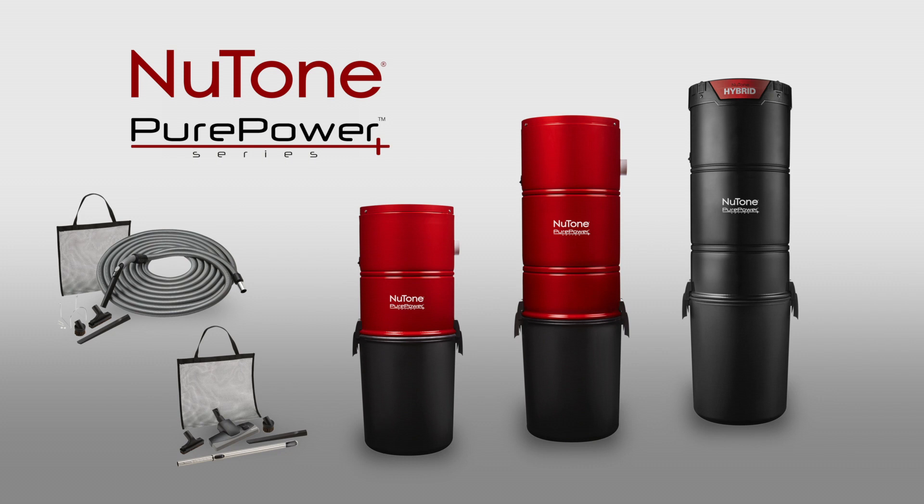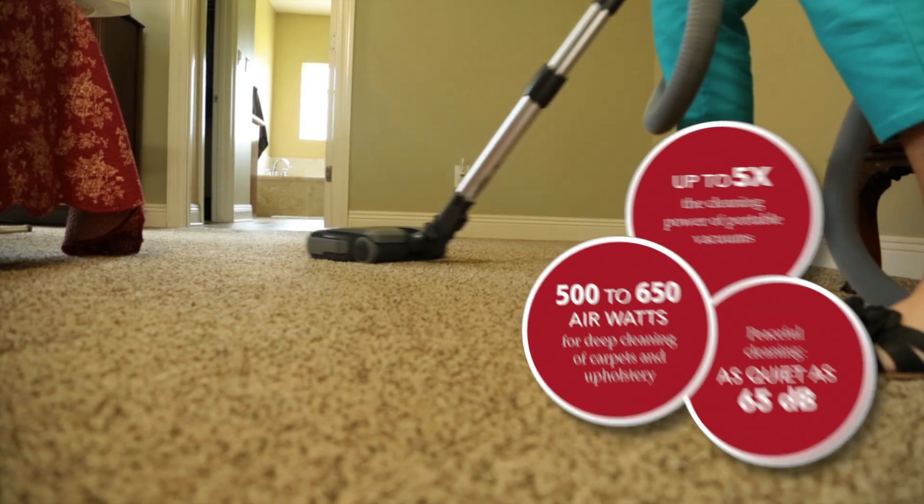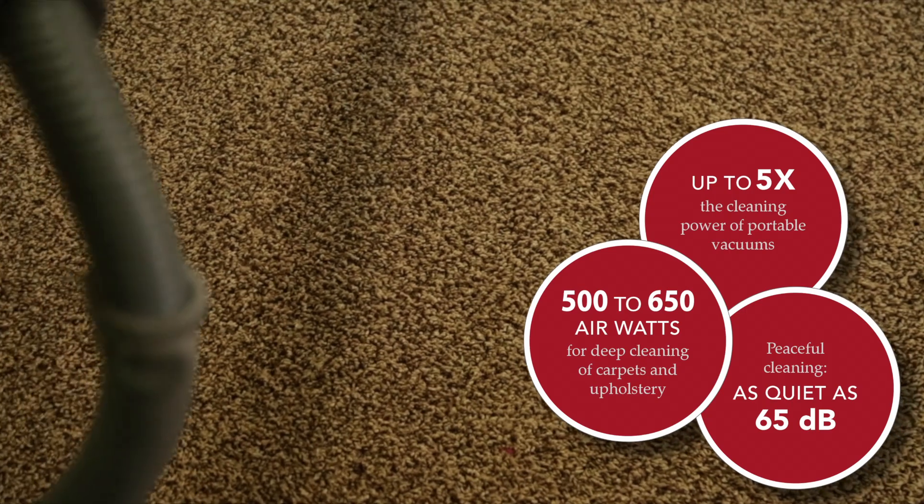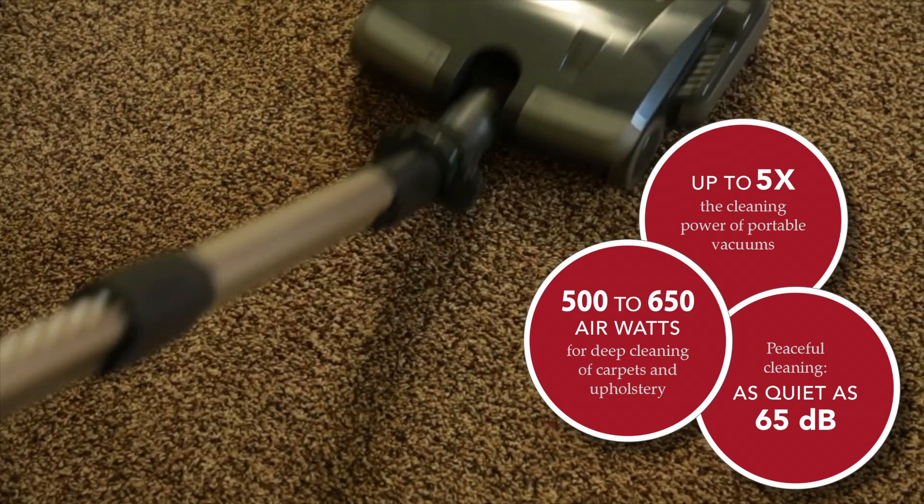Congratulations on purchasing a new NuTone Pure Power central vacuum system. NuTone central vacuums are up to five times more powerful than upright vacuums and have a large debris capacity, so you don't have to empty them often—only one or two times per year.